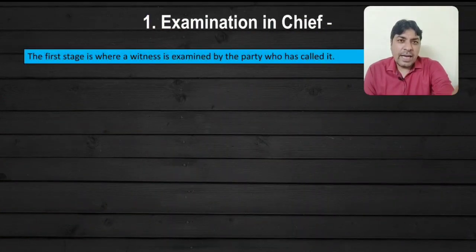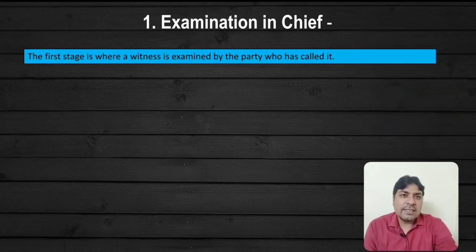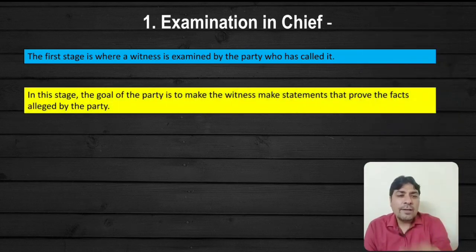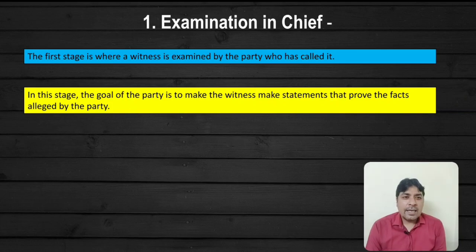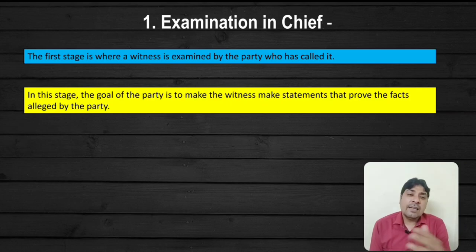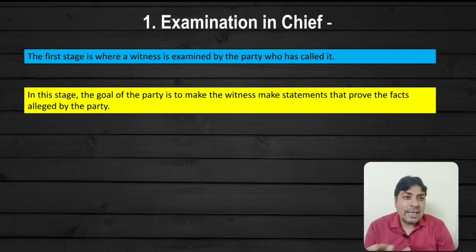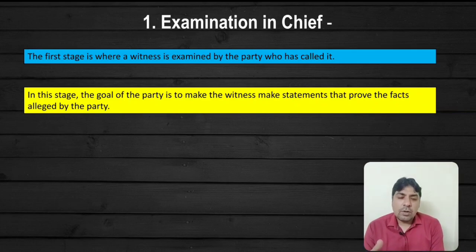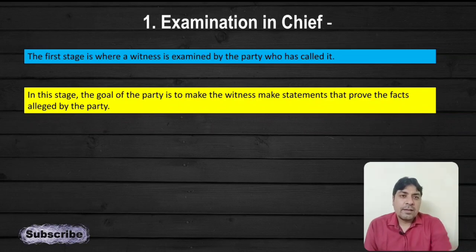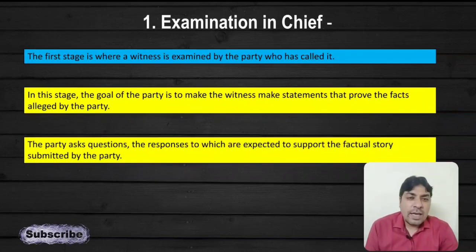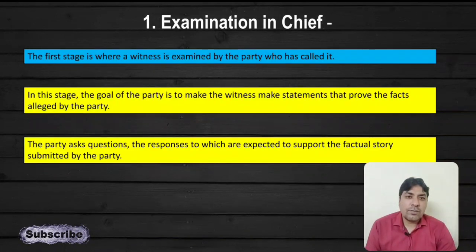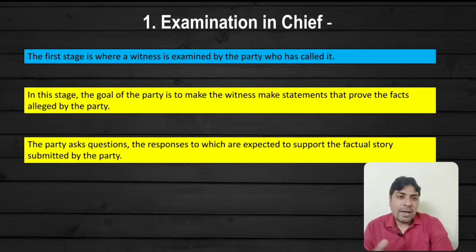Examination in chief — the first stage is where a witness is examined by the party who called him. जो party witness को बुलाएगी वो examine करेगा, तो examination in chief कहलाएगा। In this stage the goal of the party is to make the witness make statements that prove the facts alleged by the party. The very aim of examination in chief is to build up the factual history. The party asks questions the responses to which are expected to support the factual history submitted by the party.